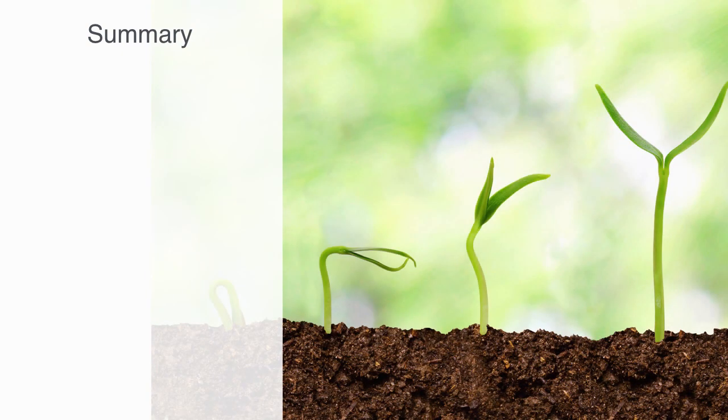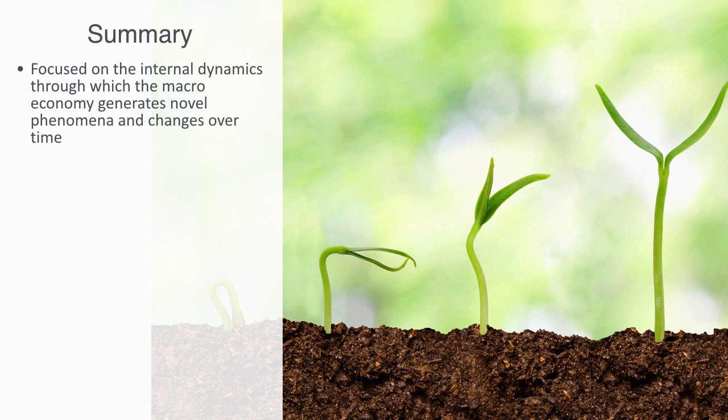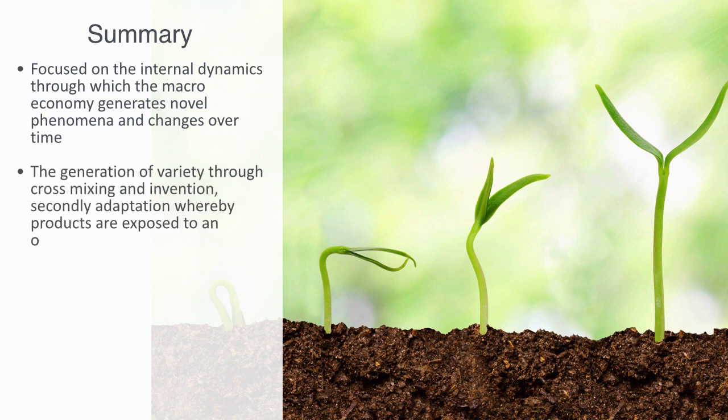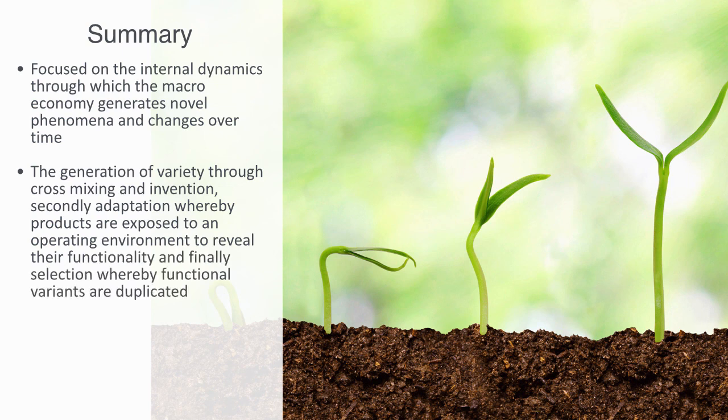In this module we've been talking about evolutionary economics as an alternative paradigm to economic development that is focused on the internal dynamics through which the macro economy generates novel phenomena and changes over time without the guidance of some centralized regulatory mechanism. We talked about this process as a product of a number of key stages, including firstly the generation of variety through cross mixing and invention, secondly adaptation whereby products and services are exposed to their operating environment in order to reveal their functionality, and finally selection whereby functional variants are selected to become more prevalent within the economy's future life cycle.